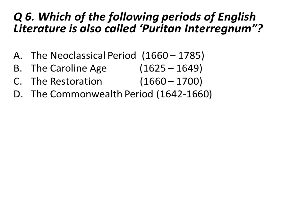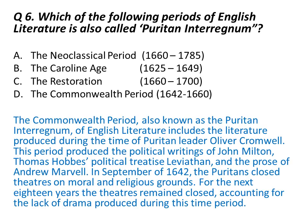Which of the following periods of English literature is also called the Puritan Interregnum? Options are: the Neoclassical period, the Caroline Age, the Restoration, and the Commonwealth period. The answer is the Commonwealth period, which is also known as the Puritan Interregnum of English literature.